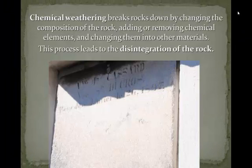Chemical weathering breaks down rocks by changing the composition of the rock, adding or removing chemical elements and changing them into other materials. This process leads to the disintegration of the rock.